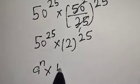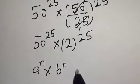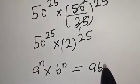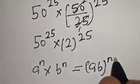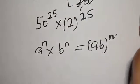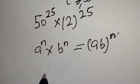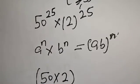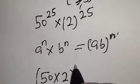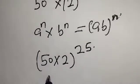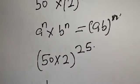Multiplied by b raised to power n, this is equal to a times b raised to power n. Then we have 50 multiplied by 2 raised to power 25, and 50 multiplied by 2 is 100.